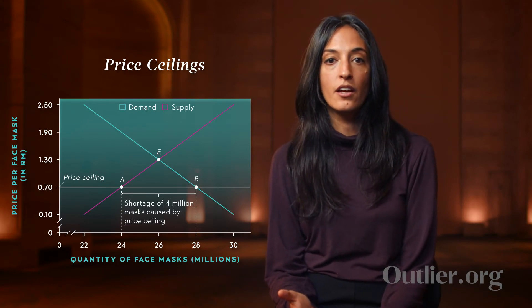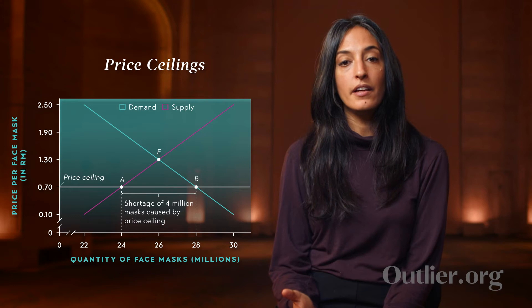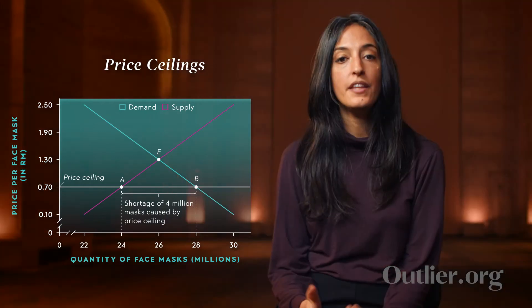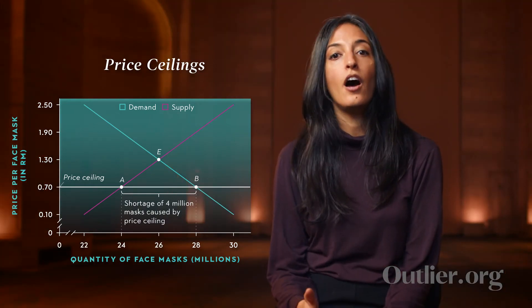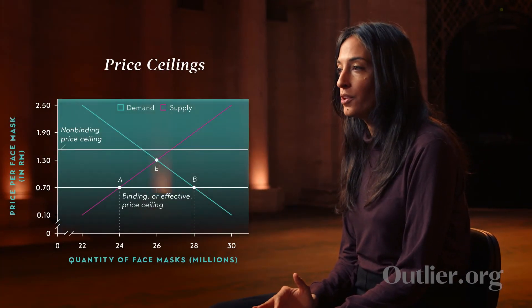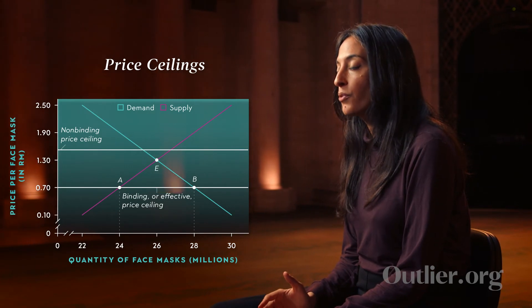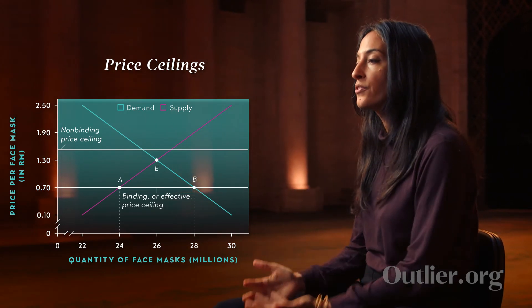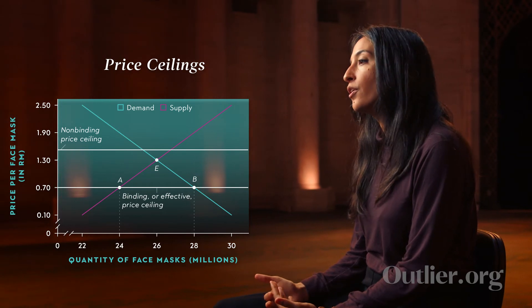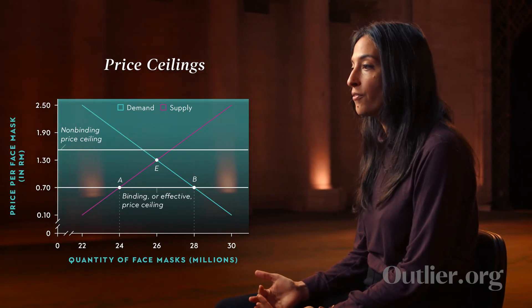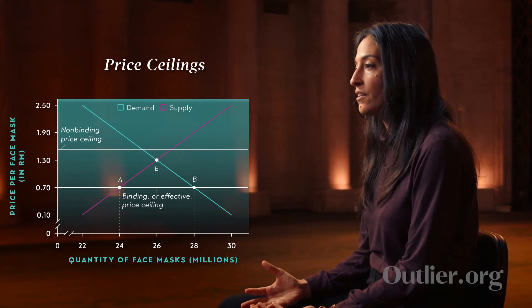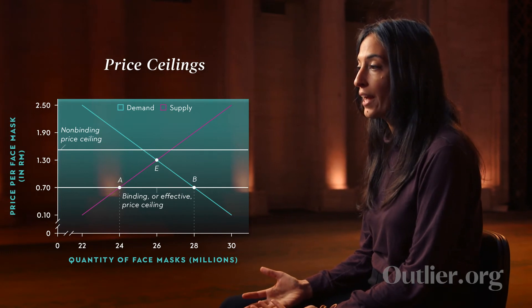At the 70 sen price ceiling, we can see that 28 million masks are demanded but only 24 million masks are supplied, meaning there is a shortage of 4 million masks. If the price ceiling were above equilibrium, it wouldn't be binding, because equilibrium would be legal. For example, if the government said you could not charge above one ringgit 50 sen, the market wouldn't really react to that, because the equilibrium price was already below that — equilibrium would be legal, so the price ceiling wouldn't be binding.